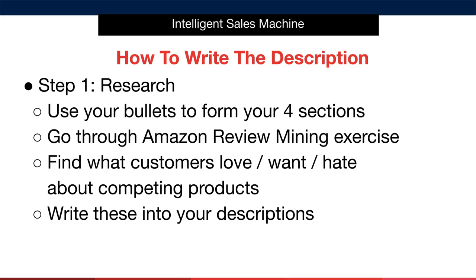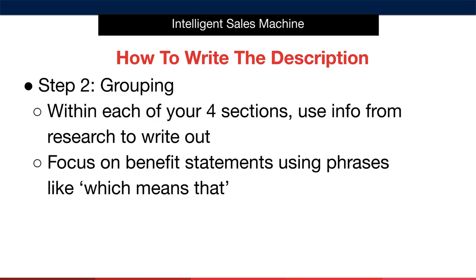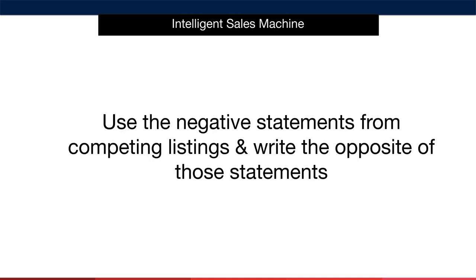Let's take a look at how you'll do this step by step. Step one: we'll use our research from earlier using the content review as I just mentioned. Use your bullet points as section headings, creating simple eye-catching headlines to encourage customers to read on. You don't use your bullet points verbatim from the bullet point section — you take the bullet point and turn it into a heading. Focus on benefit statements using phrases like 'which means that' in order to show how the features help them achieve specific outcomes. Essentially, you're going to take negative statements from competing listings and write the opposite of those statements.